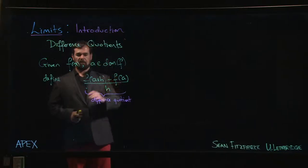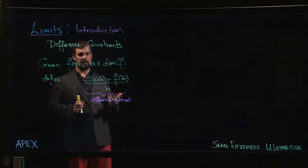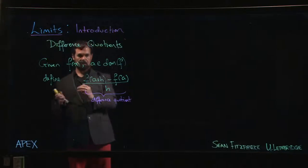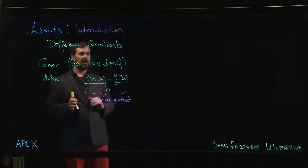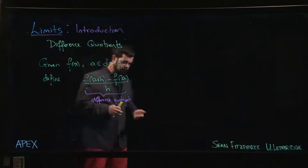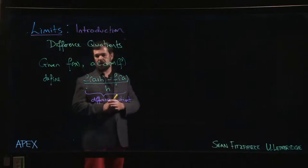Because this difference quotient that you see here is part of the definition of a derivative, we're going to see that coming up. So the way this works is you're given a function and you're given some point in the domain of that function. Now to be a bit more precise, we want to guarantee that the domain actually contains an interval on either side of this number a.